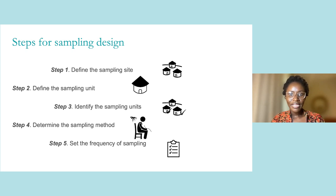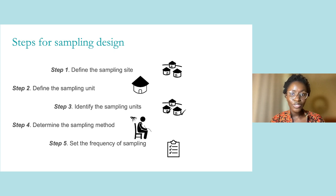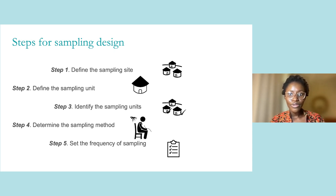Module 5 outlines five steps to design a sampling plan. In Steps 1 and 2, you define your sampling sites and units. In Step 3, you identify which units to sample within your site. In Step 4, you confirm the sampling method you will use. And finally, in Step 5, you set the frequency of sampling. Now let's learn a little more about these steps in the next slides.